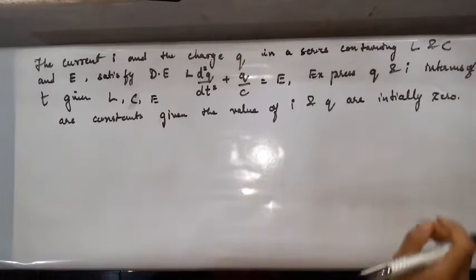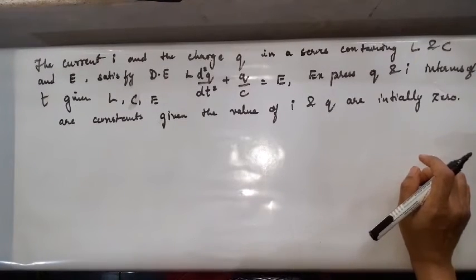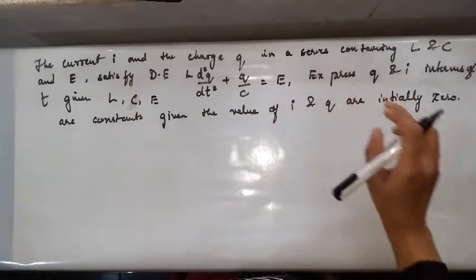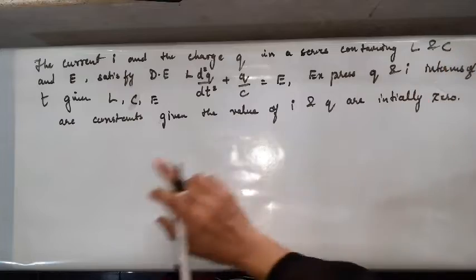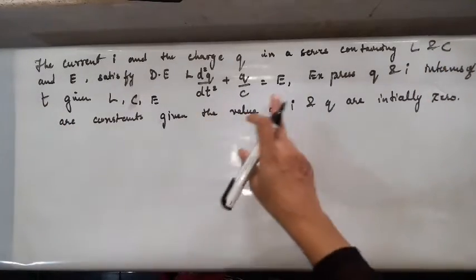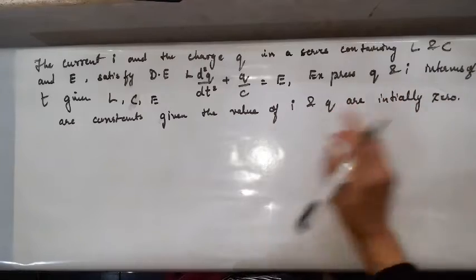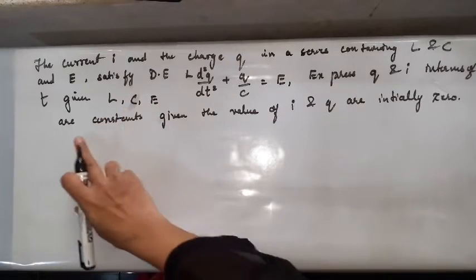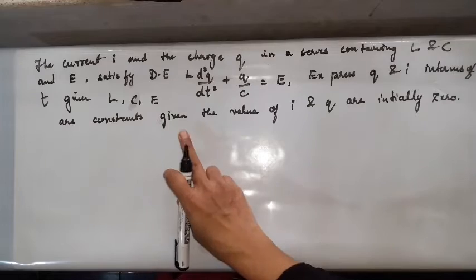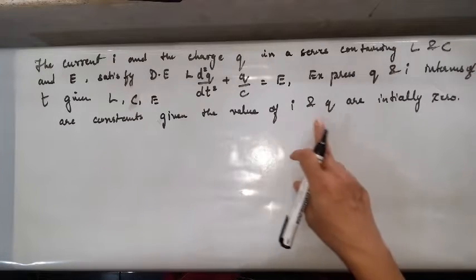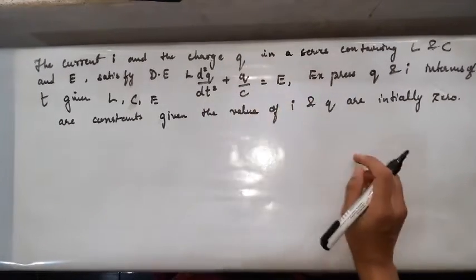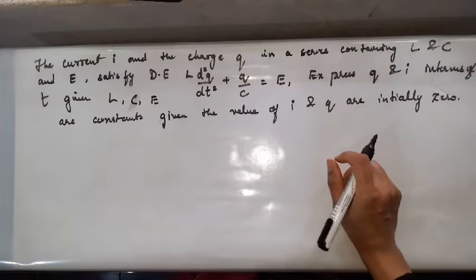Now here we have one more problem from the LCR circuit, also from your model question paper. The current i and charge q in a series circuit containing inductance L, capacitance C, and EMF E satisfy a differential equation. Express q and i in terms of t, given that L, C, and E are constants and that initially both i and q are zero.